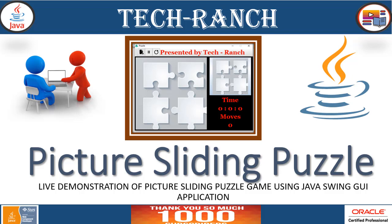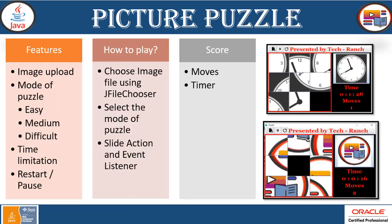This is a picture sliding puzzle game application implemented using Java Swing graphical user interface API. The application has features where you can upload an image — JPEG, GIF, BMP, PNG, or any type of format. The mode of the puzzle can be easy, medium, or difficult, and there is a time limitation with a timer.